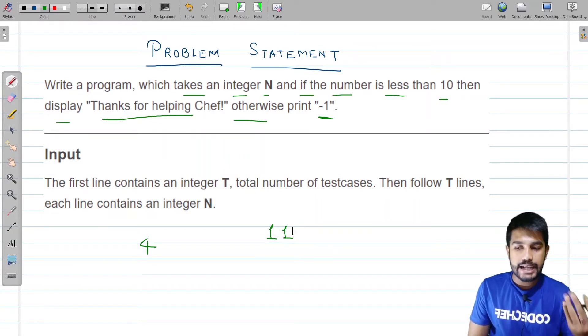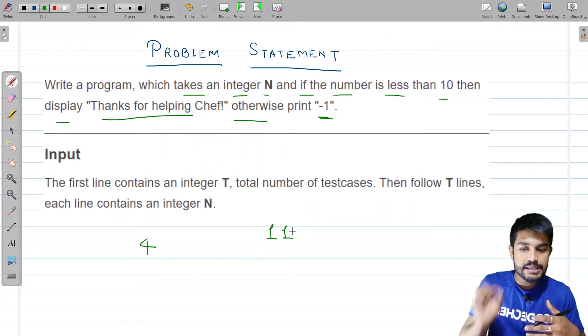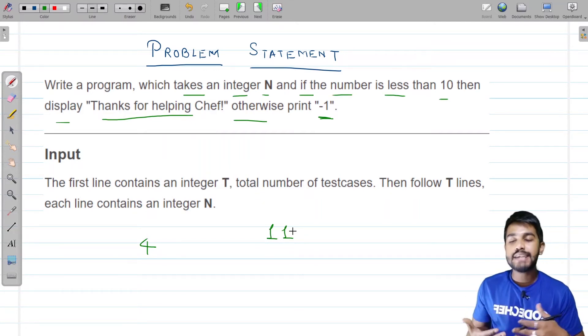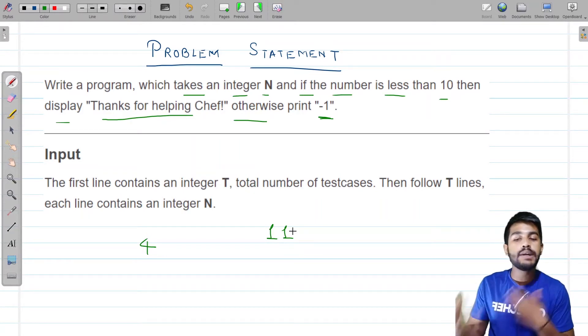Now let's look at the input itself. The input says that it would contain an integer t and what is t, t is the number of test cases, then it follows t lines each containing an integer n, so it is just that we need to handle multiple cases.